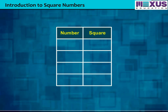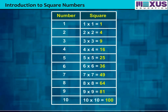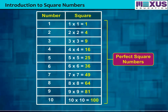Now, let us find out the square of 1. By multiplying 1 by 1, we get the square of 1 is equal to 1. Similarly, the square of 2, by multiplying 2 into 2, we get the square of 2 is equal to 4. Likewise, the square of 3 is 9. The square of 4 is 16. Similarly, calculate for other numbers too. Thus, numbers 1, 4, 16, and so on are the square numbers. They are also known as the perfect squares.